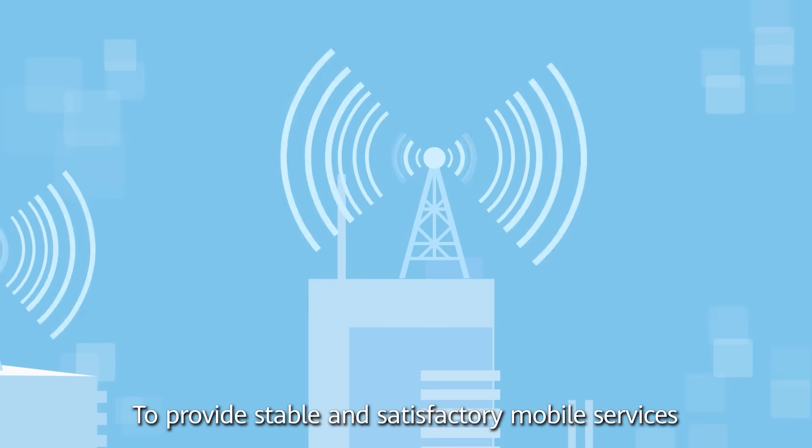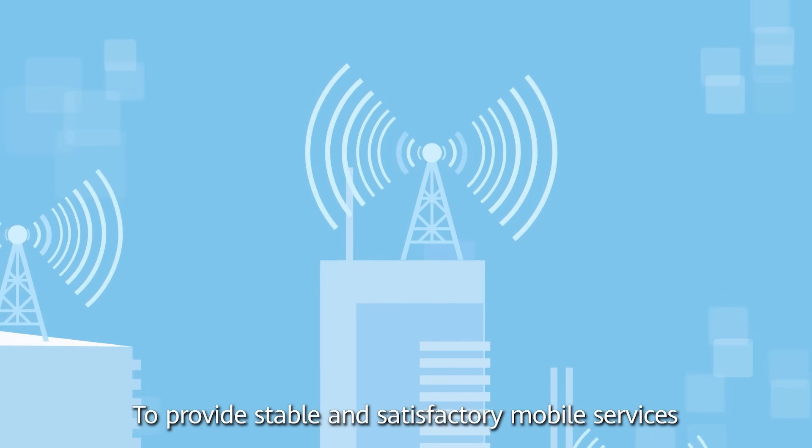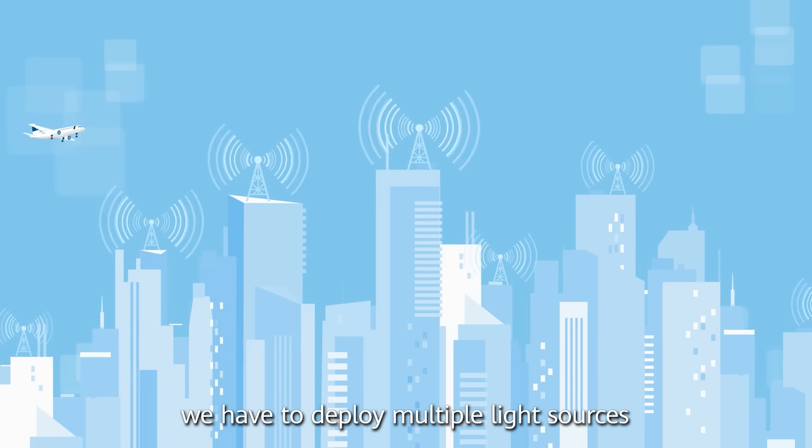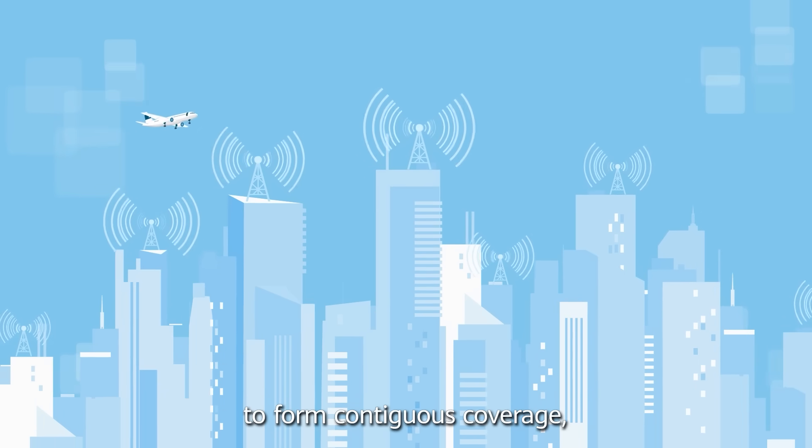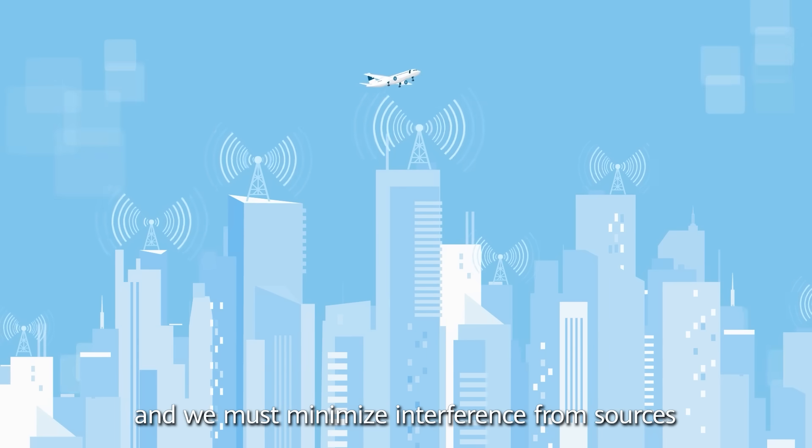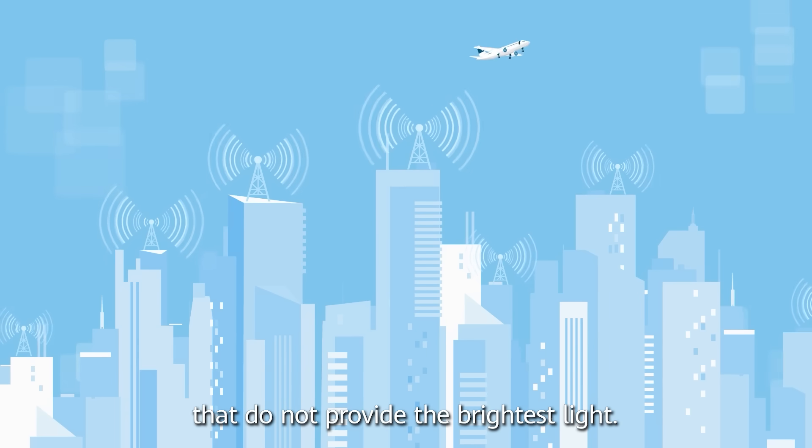To provide stable and satisfactory mobile services in urban areas, we have to deploy multiple light sources to form continuous coverage, and we must minimize interference from sources that do not provide the brightest light.